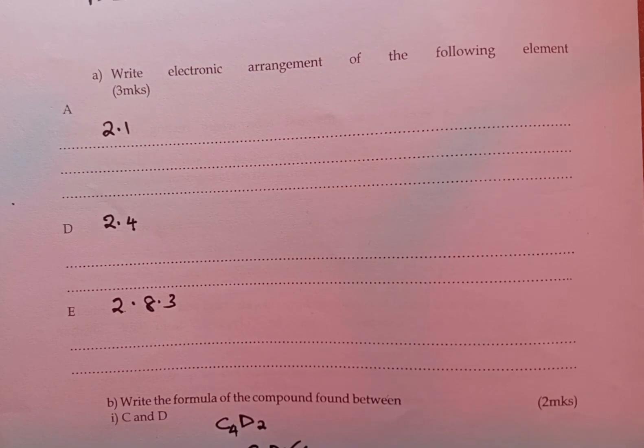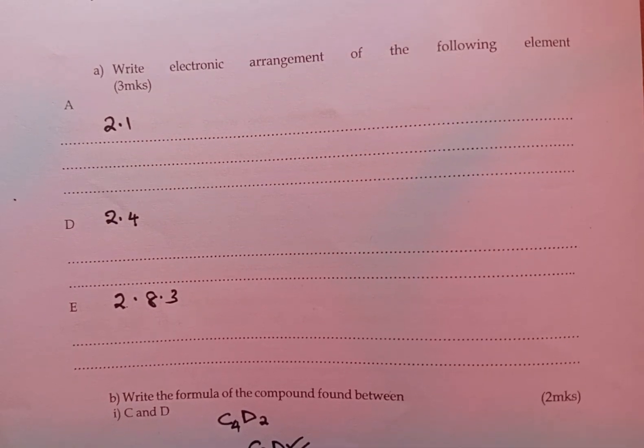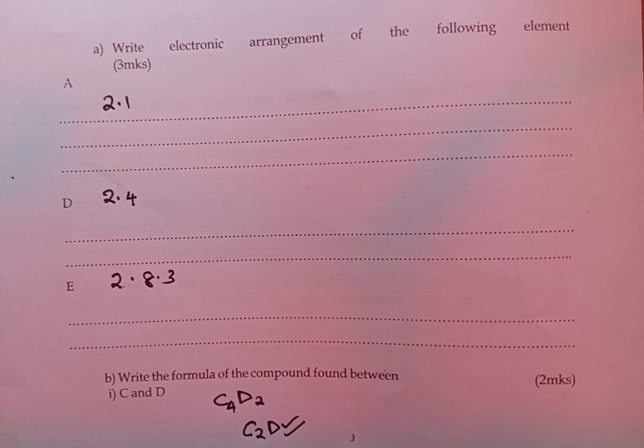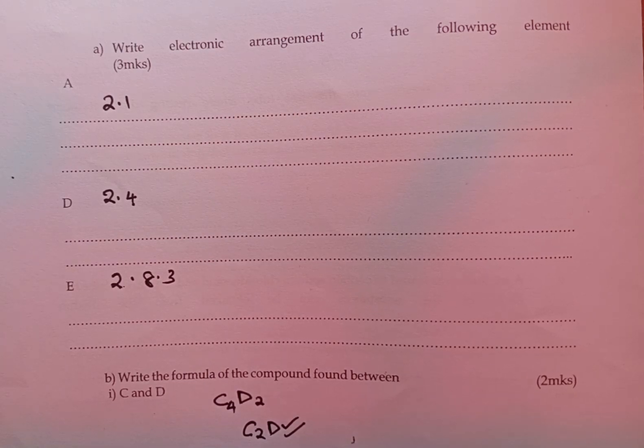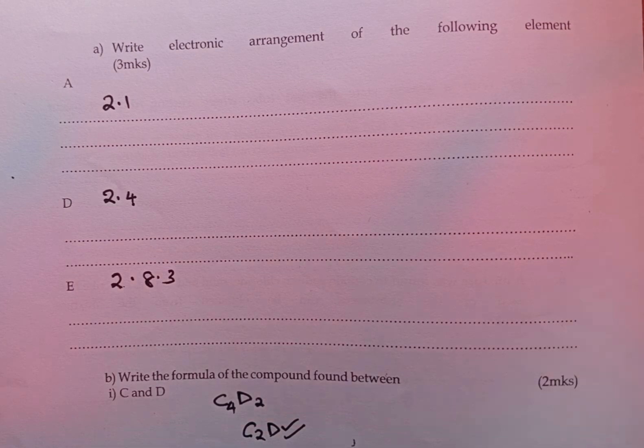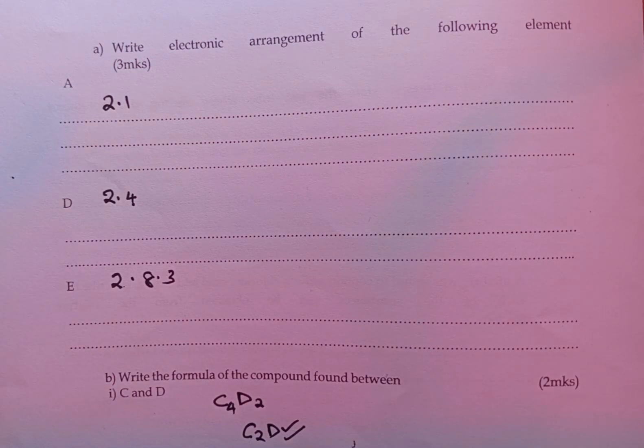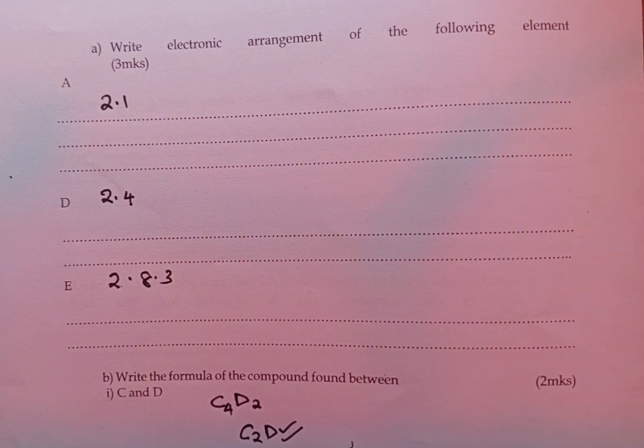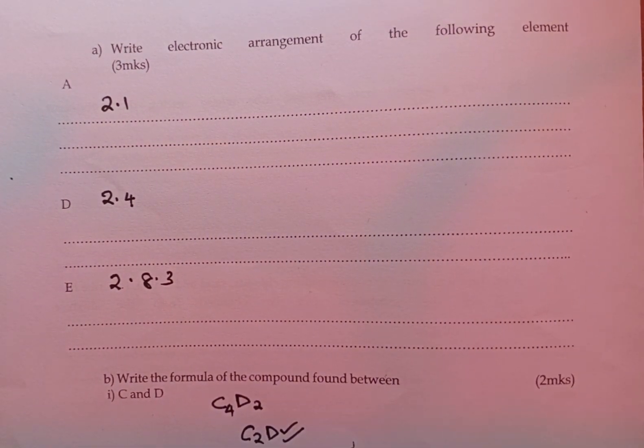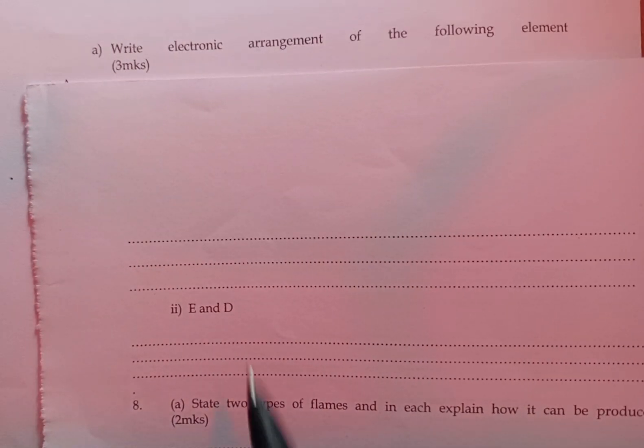This becomes our final formula of the compound formed between elements C and D. The last part of the question is where we are supposed to write the formula of the compound formed, again between E and D.